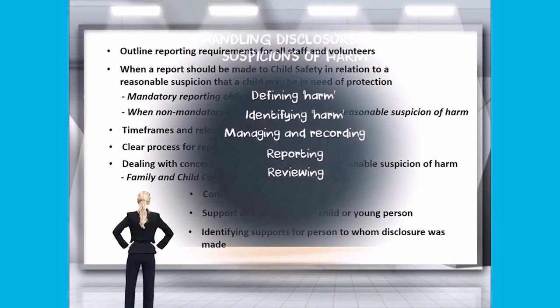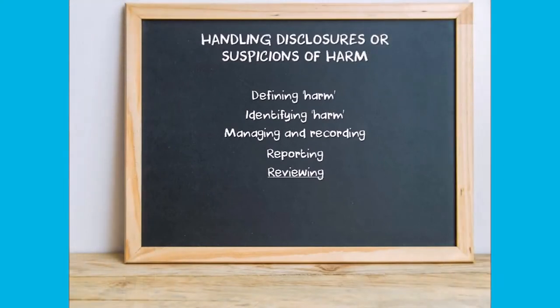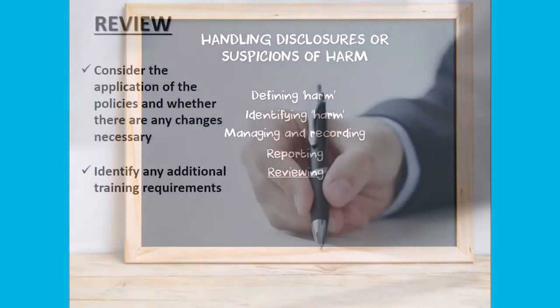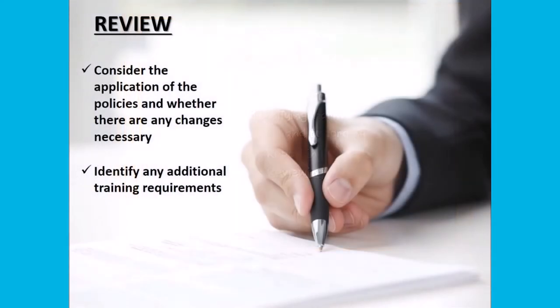Lastly, let's look at reviewing current policies and procedures. You should undertake a review of the operation of your policies and procedures following a disclosure or suspicion of harm being actioned, to consider the application of the policies and whether there are any necessary changes, and identify any additional training requirements.